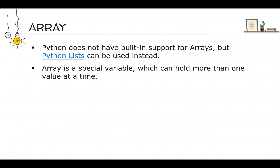Let's go from normal variables to arrays. We can store more than one value — for example, Car1, Car2, Car3, Car4. We can store all the car names under just one variable name. That's the problem with declaring multiple variable names, and that's why we use arrays.